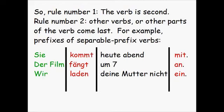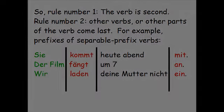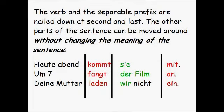Rule number one: the verb is second. Rule number two: other verbs, or other parts of the verb, come last. For example, prefixes of separable prefix verbs: Kommt mit. Fängt an. Laden ein. The verb and the separable prefix are nailed down at second and last. The other parts of the sentence can be moved around without changing the meaning. Heute Abend kommt sie mit. Um sieben fängt der Film an. Deine Mutter laden wir nicht ein.